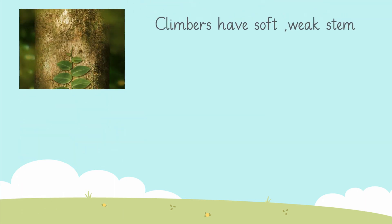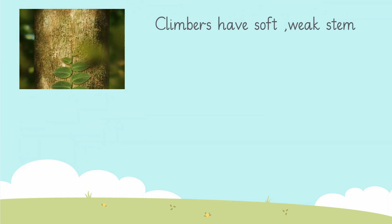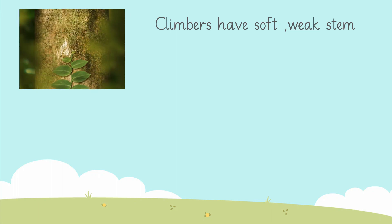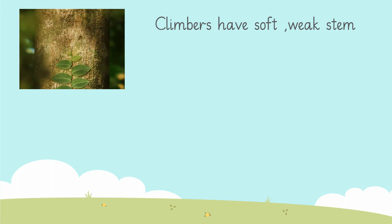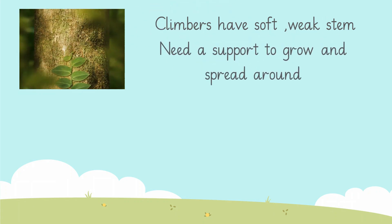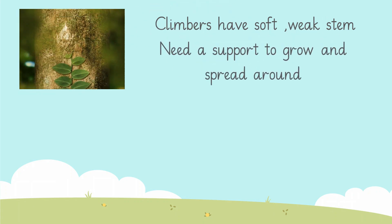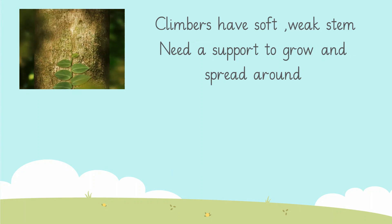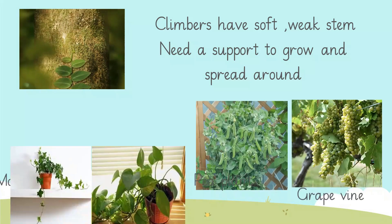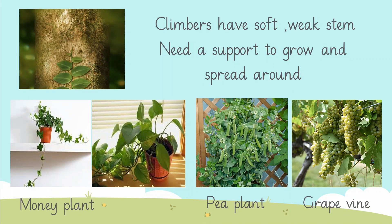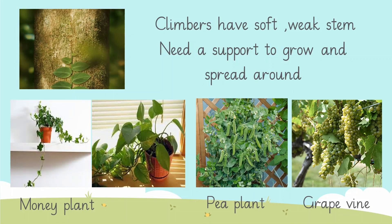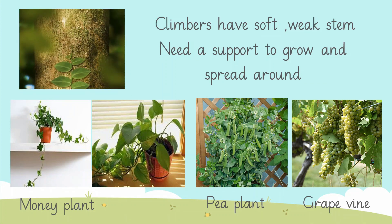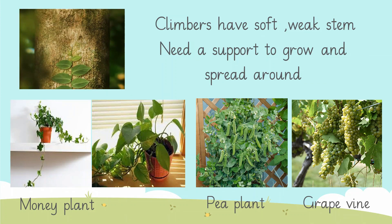Let's learn about another kind of plant — and they are climbers. Climbers have soft, weak stems. They can't stand erect and need a support to grow and spread around, that is why they are called climbers. Money plant, bean plant, and grape vine are examples of climbers, and you must have seen them around.